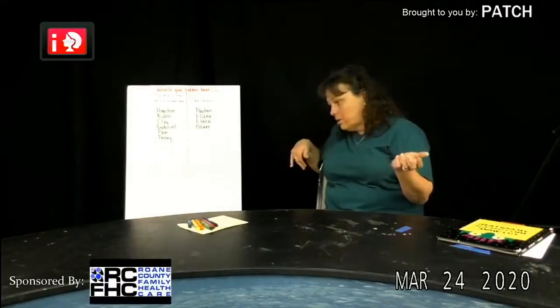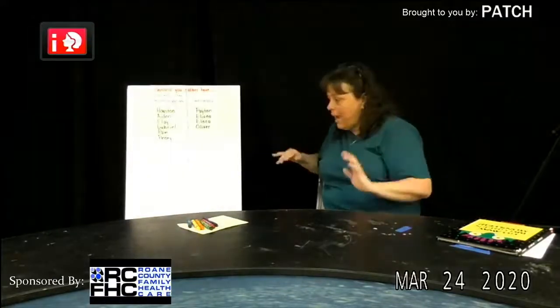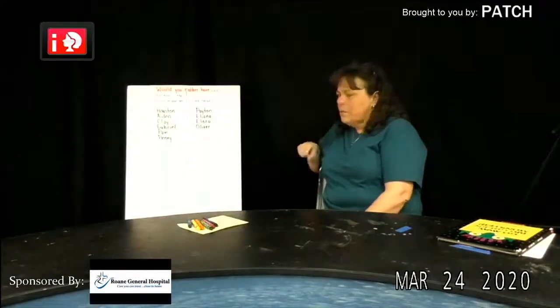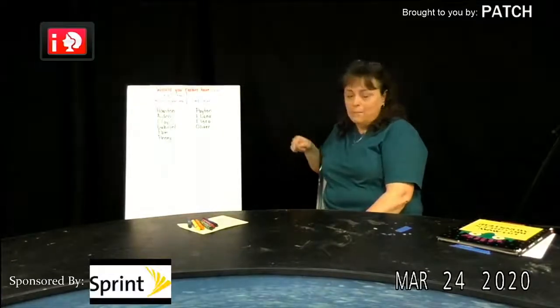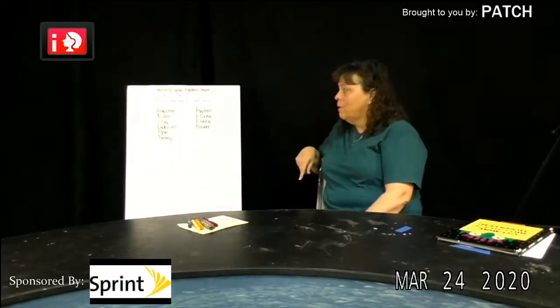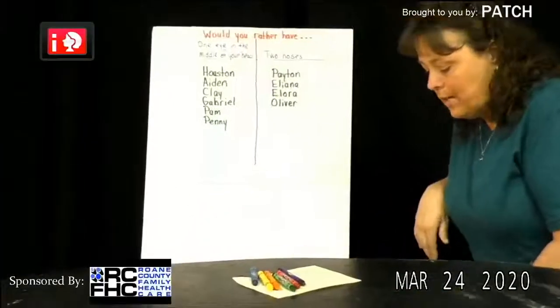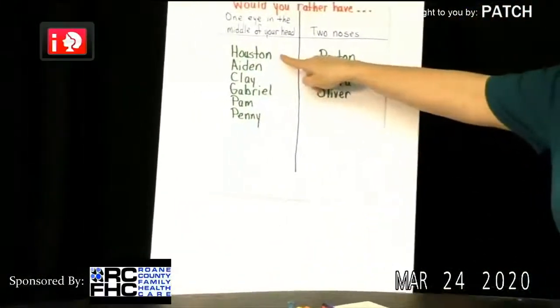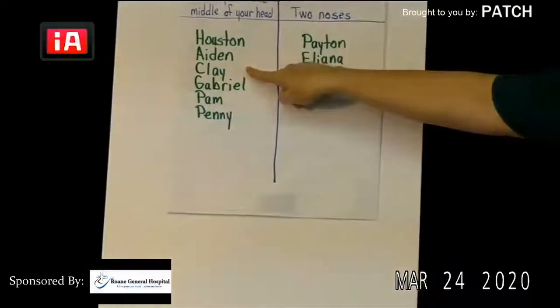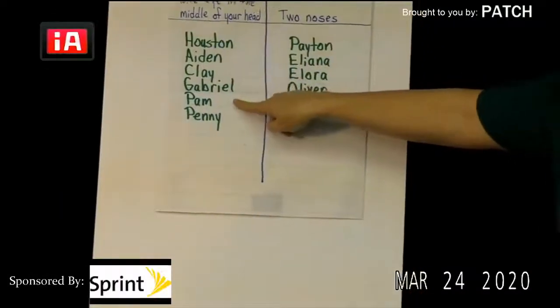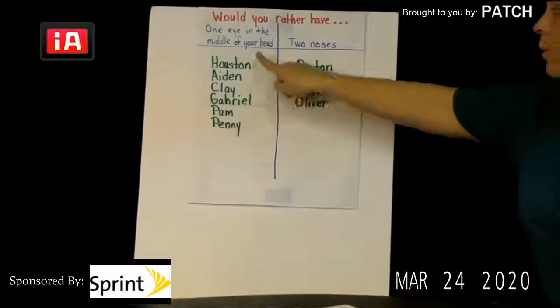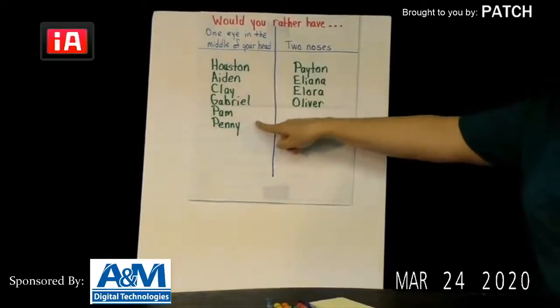Ask your mom, ask your dad, got brothers, sisters, your aunts, or just whoever. Ask them, would you rather have one eye in the middle of your head or two noses? So then we go around our class and we ask. So Houston, Aiden, Clay, Gabriel, Miss Pam, Miss Penny, we decided we wanted one eye in the middle of our head.